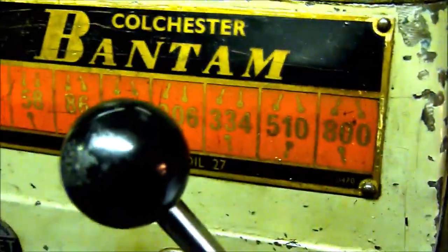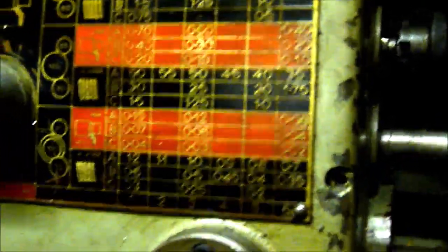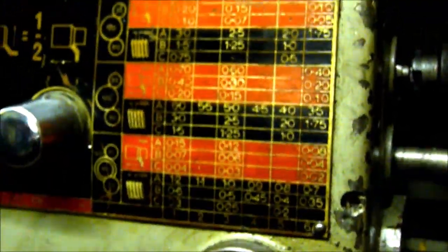Running at 334 RPM and we're feeding at 0.06mm. That's about 6mm.